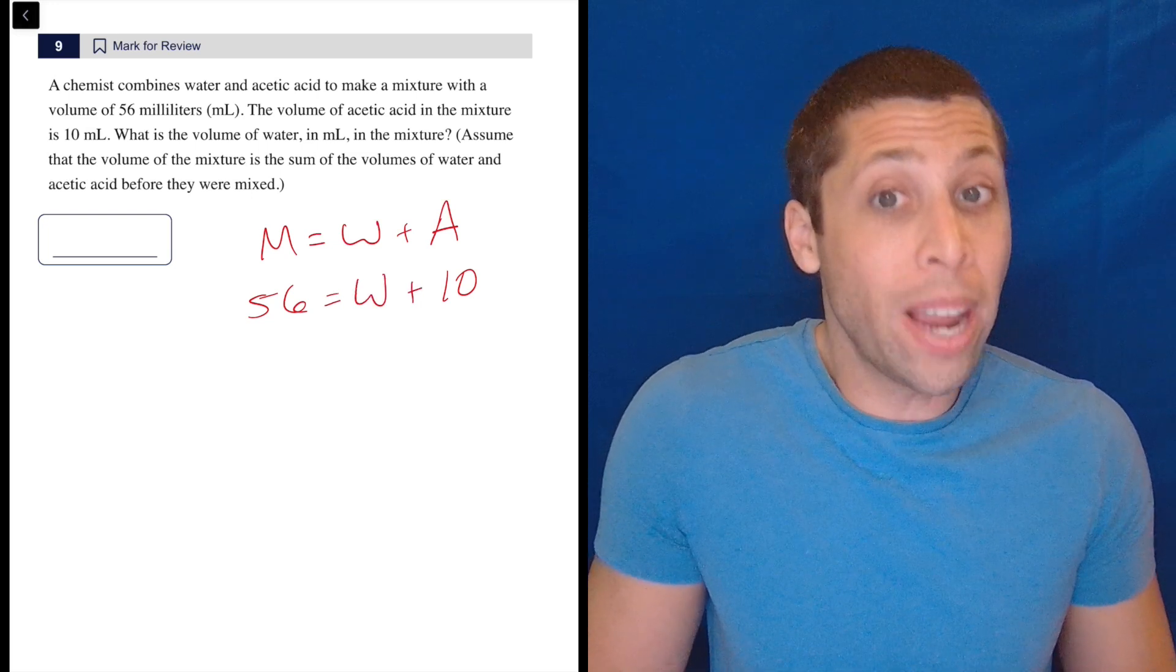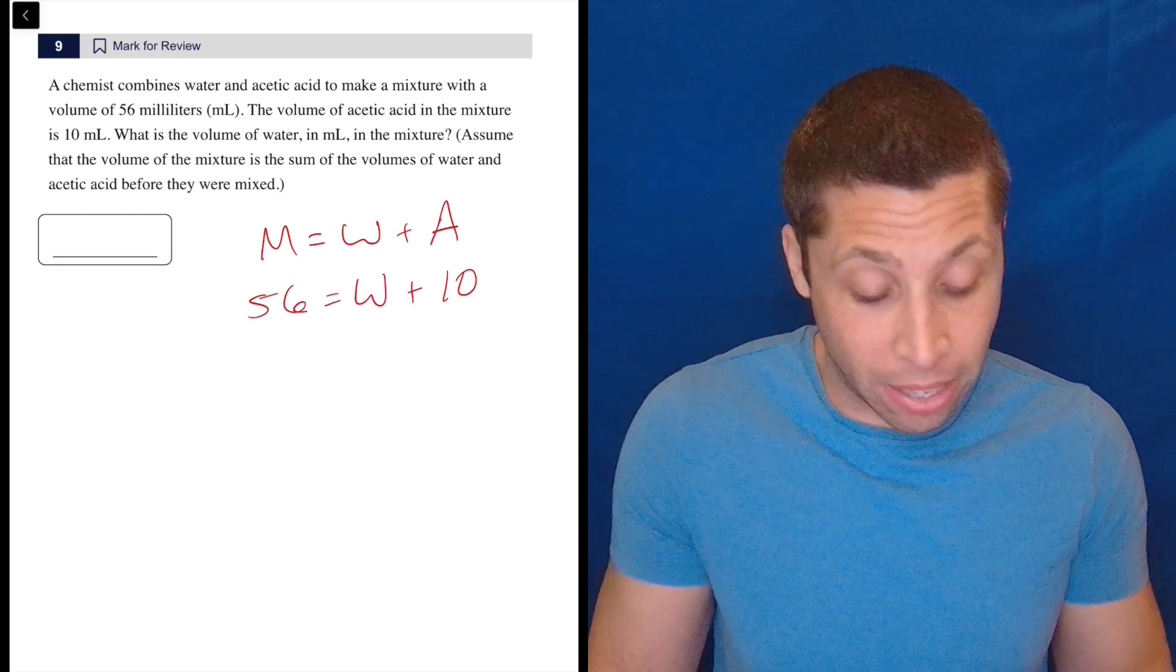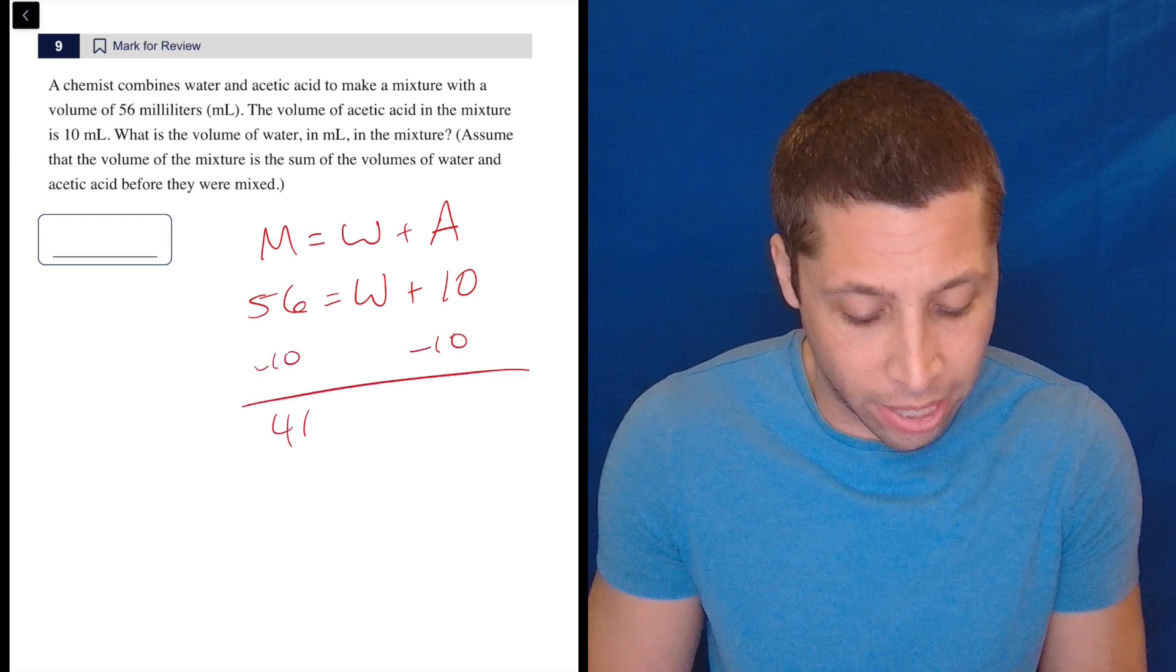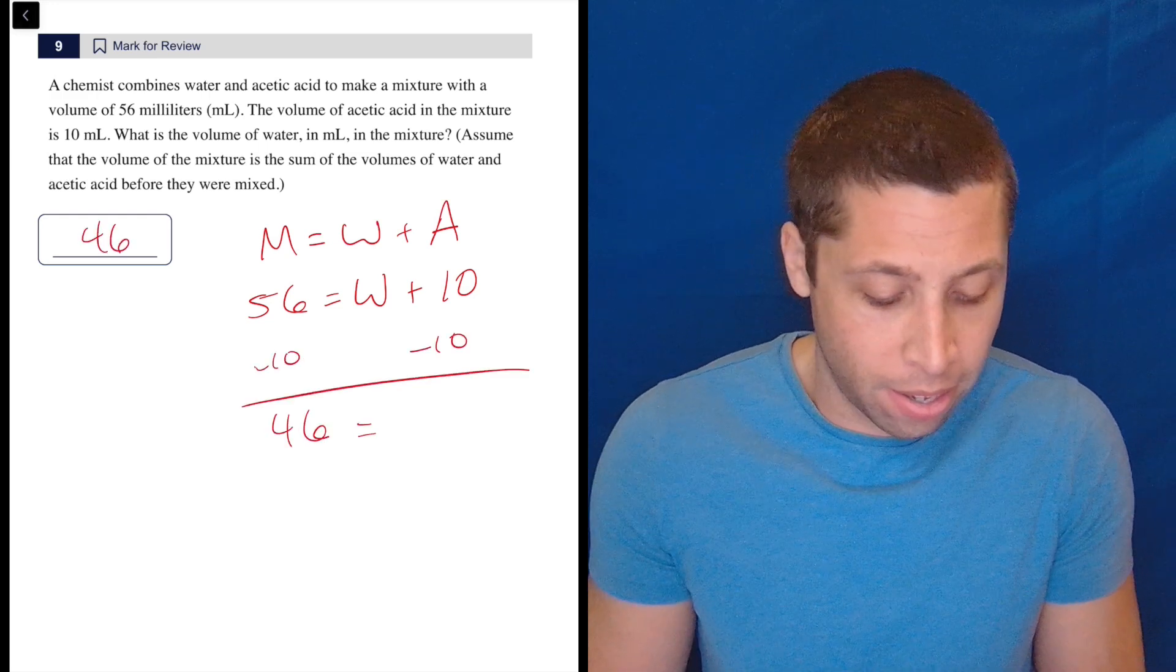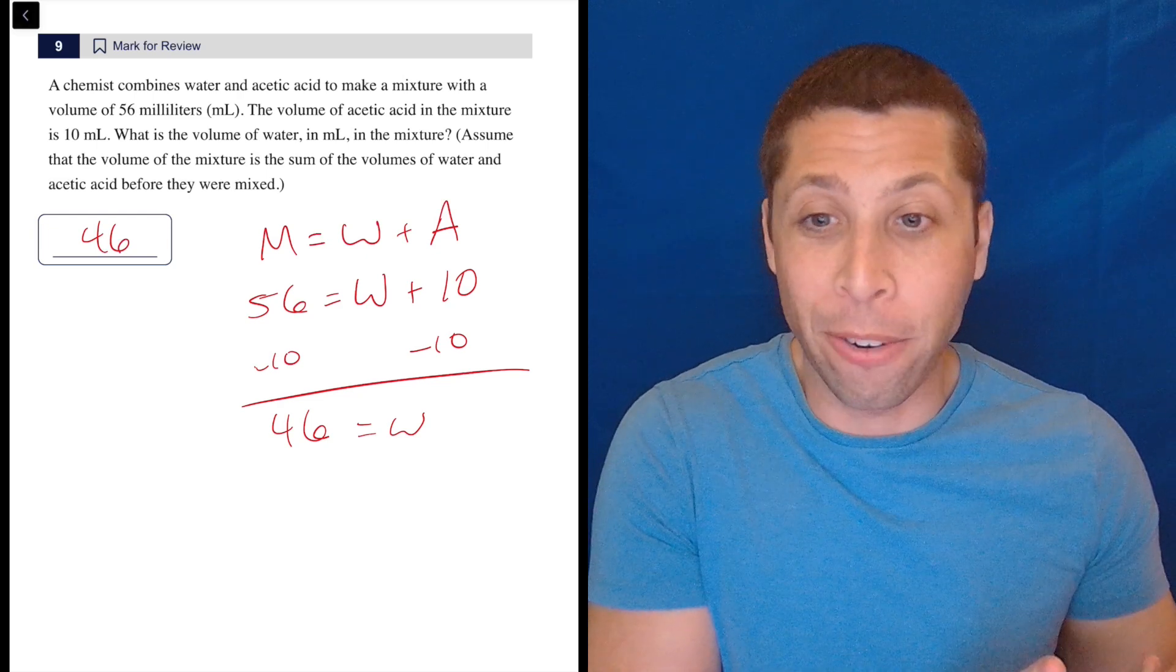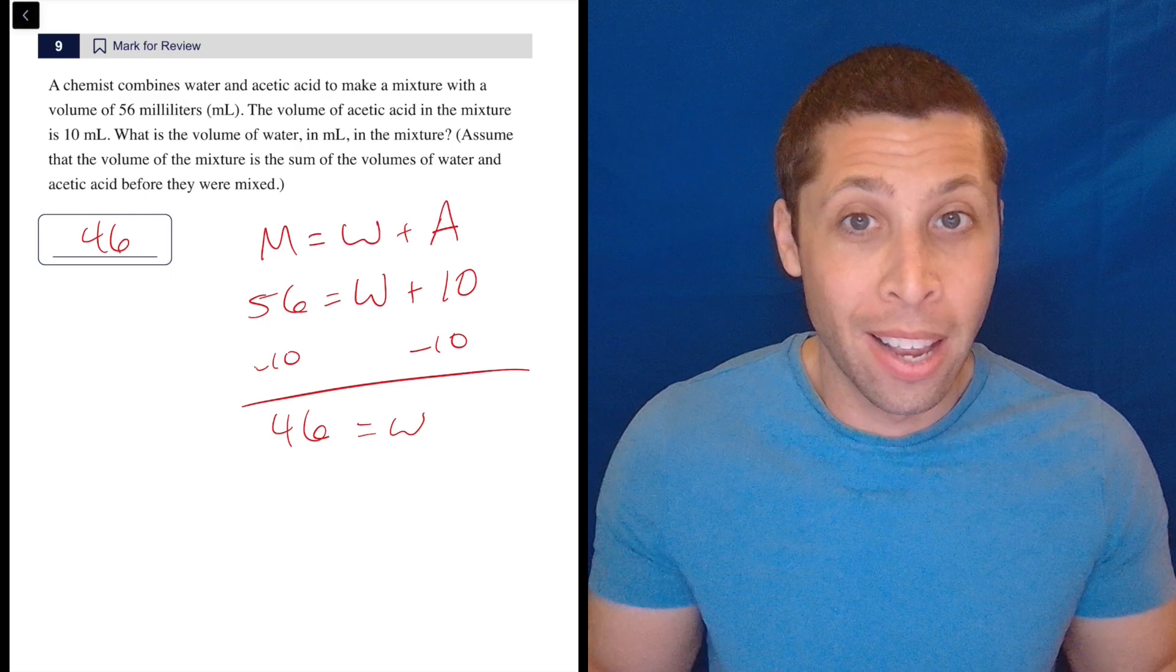We can make an equation like I just did, but I'm mostly making it for your benefit. Just do some subtraction, right? It's 46. That's the whole thing. You have a mixture of 56 milliliters. 10 of them are already accounted for. What's left?